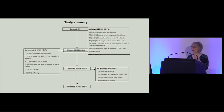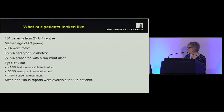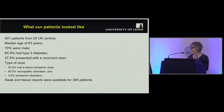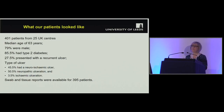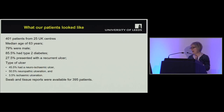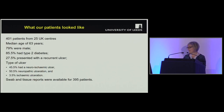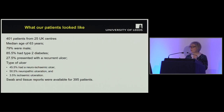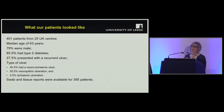So we screened 680 patients to be able to recruit 400. This wasn't a trial in that we didn't allocate some people to testing in one way and others in another way. All 400 patients were both exposed to tissue sampling and swabbing. While 401 patients were registered, data was only available on 400, and of those only 395 had full results from both their tissue and their swab. The patients weren't unusual — mainly male, mainly with the distribution between neuroischaemic and neuropathic ulceration.